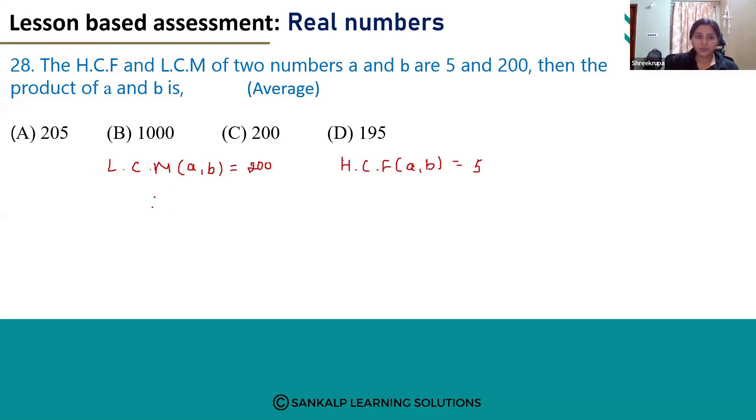Here we just have to use the relationship between LCM of A and B and HCF of A and B. If we take the product of HCF and LCM of A and B, it will be equal to the product of the given numbers.